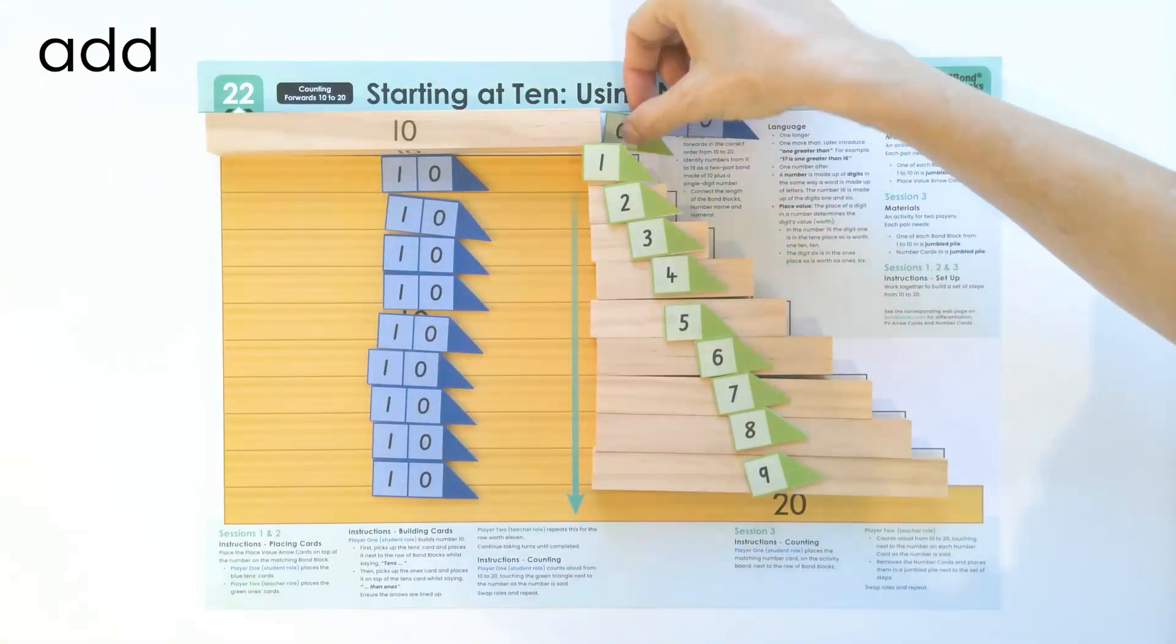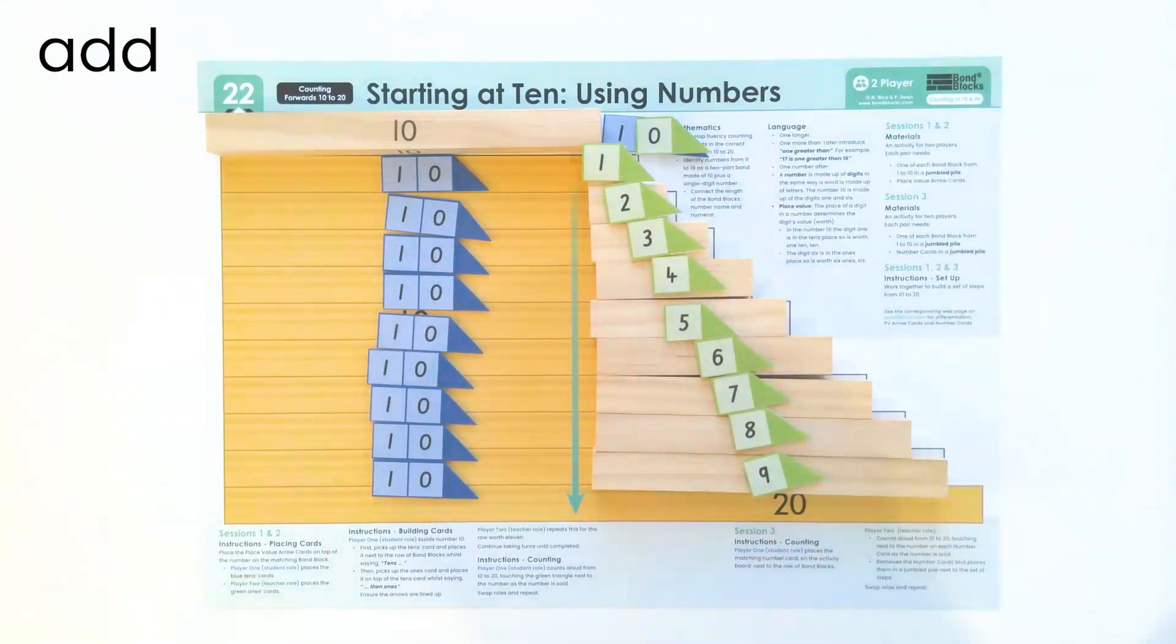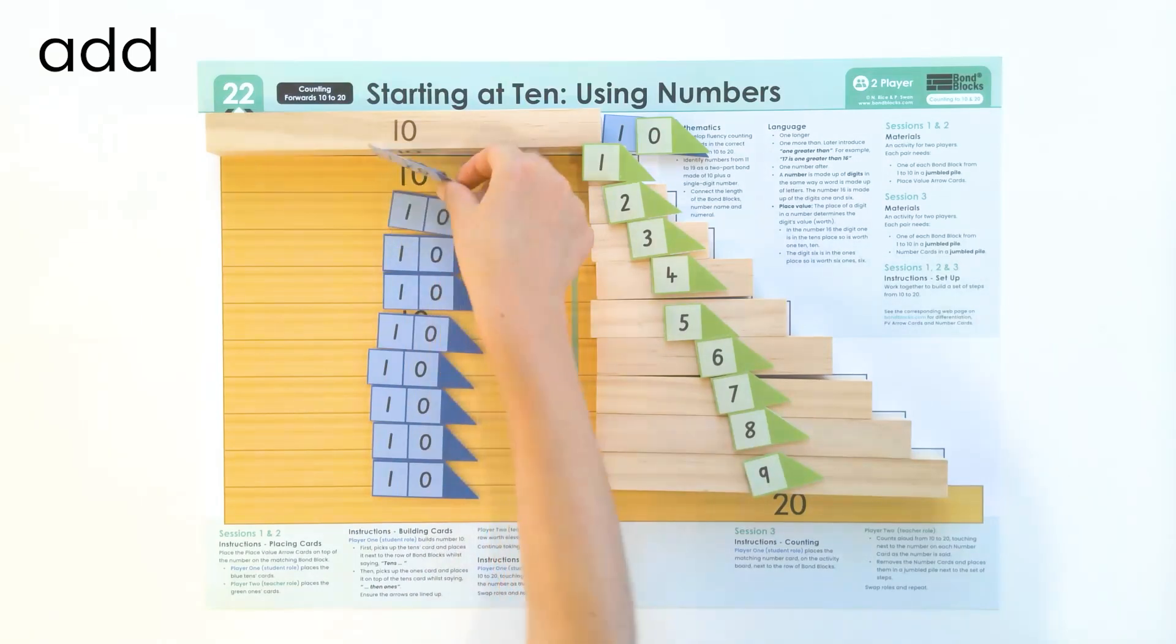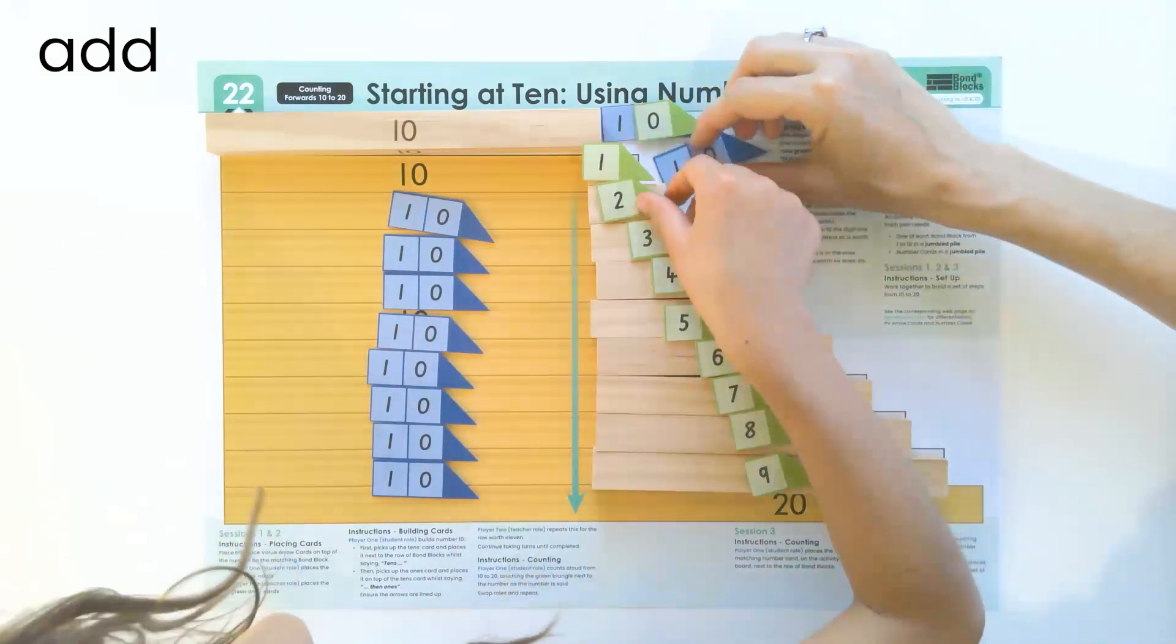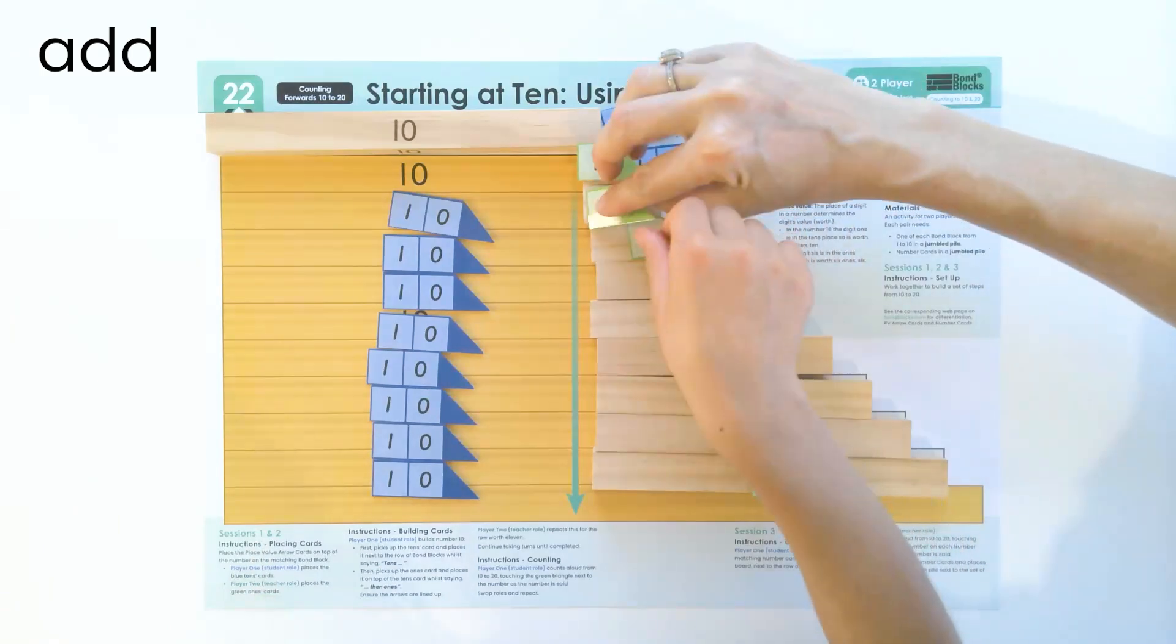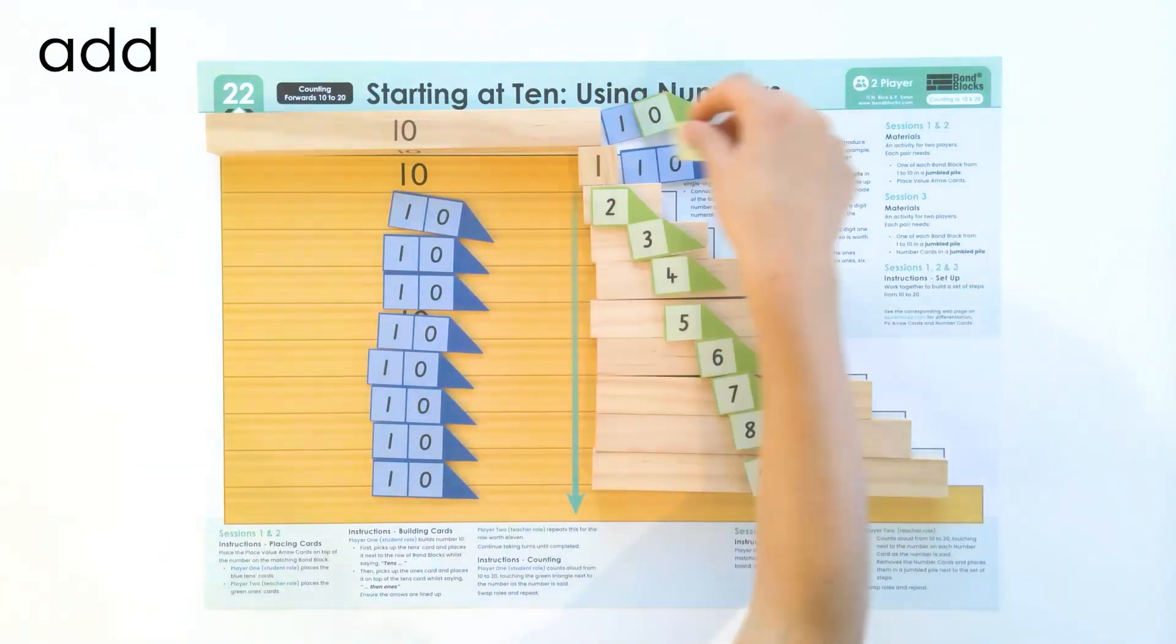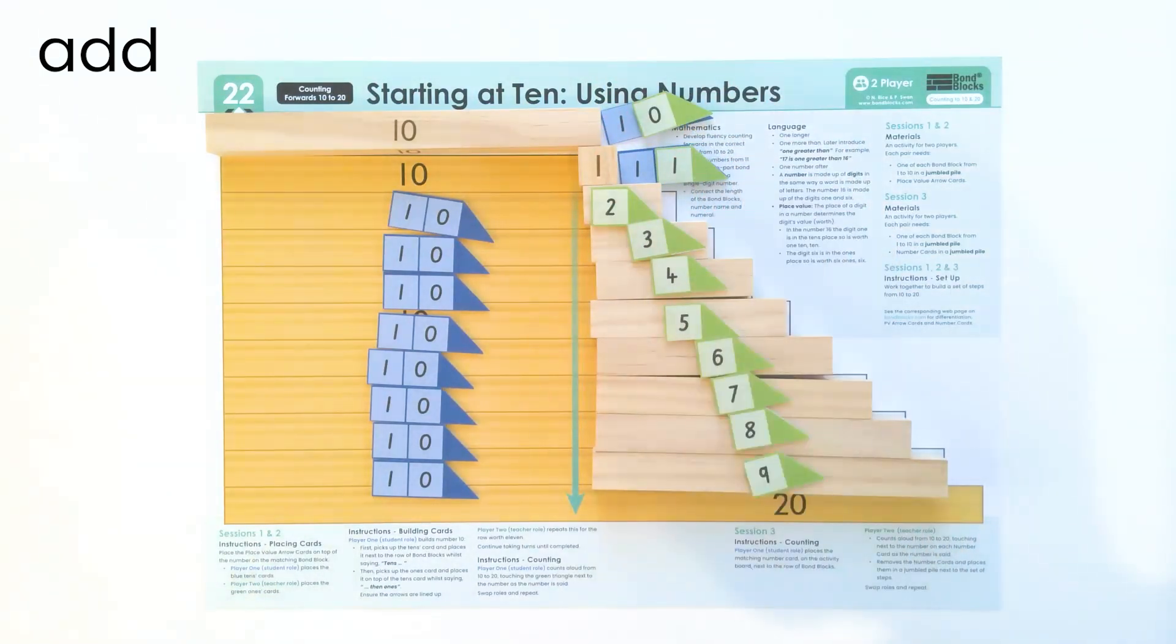Ten, add zero is ten. Ten, add. Just hop up on your knees so you can see because the disc is too high. Ten, add one is eleven. Well done.